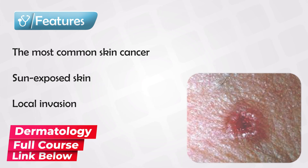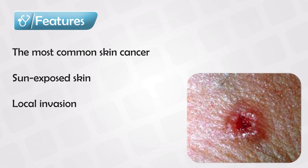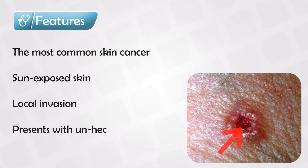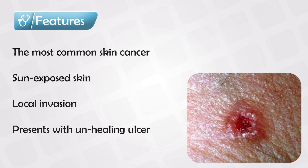The lesion itself has a central area, a border, and a surrounding area. The central area is often either ulcerated or crusted. In fact, one of the most common presentations is an ulcer region that does not heal. The borders are often rolled up, and if you want to take a biopsy, you take it from the borders. The surrounding area tends to have some telangiectasis.